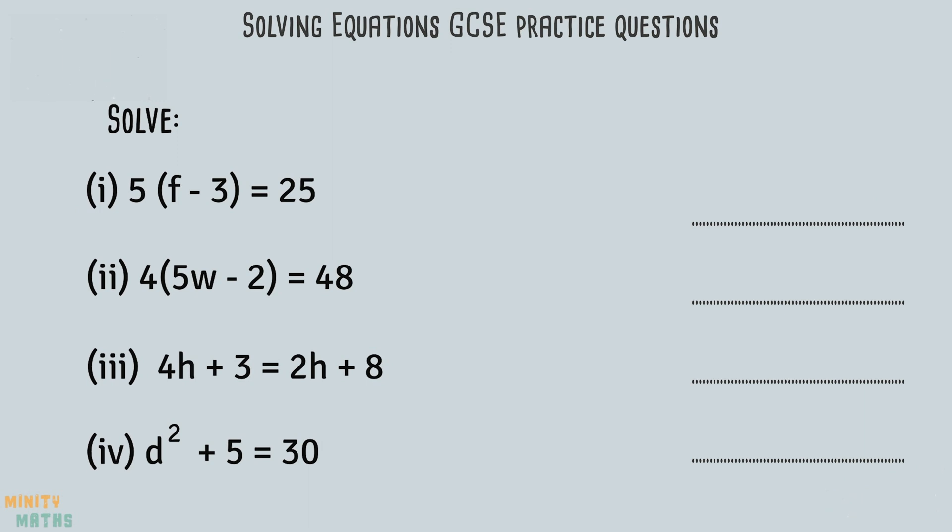This next set of questions involves solving equations. With question 1 there are two ways we can solve this. We can either expand the brackets or rearrange. Let's look at how we can rearrange this equation before solving. Firstly, we can remove the 5 outside of the brackets by dividing both sides by 5. We can then add 3 to each side to cancel out the minus 3 and get f on its own.